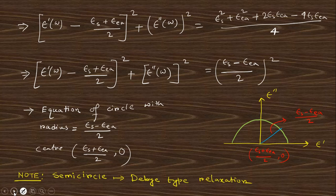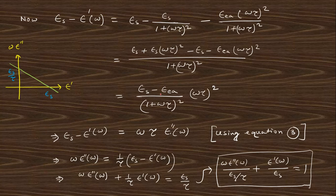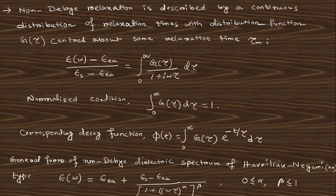For another type of relaxation, take the same equation and rearrange it into another form to get the equation of a straight line — an intersecting straight line with a specific intercept. Rearranging again into yet another form gives a different straight line. So you get straight lines in different forms, indicating that this function can be expressed differently. In general, non-Debye relaxation is also possible.